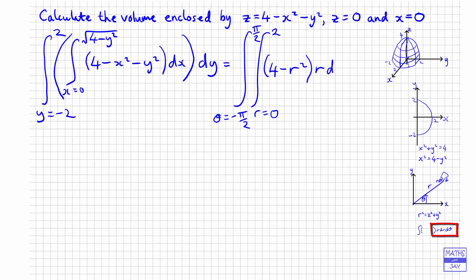So let's have r dr and then d theta. Now, this is really simple to do. We could actually separate out these two because there are no thetas in there at all. So we could think of this as the integral from minus pi by 2 to pi by 2 of 1 d theta multiplied by the integral from r is 0 to 2 of 4r minus r cubed, multiplying out that bracket there, dr.